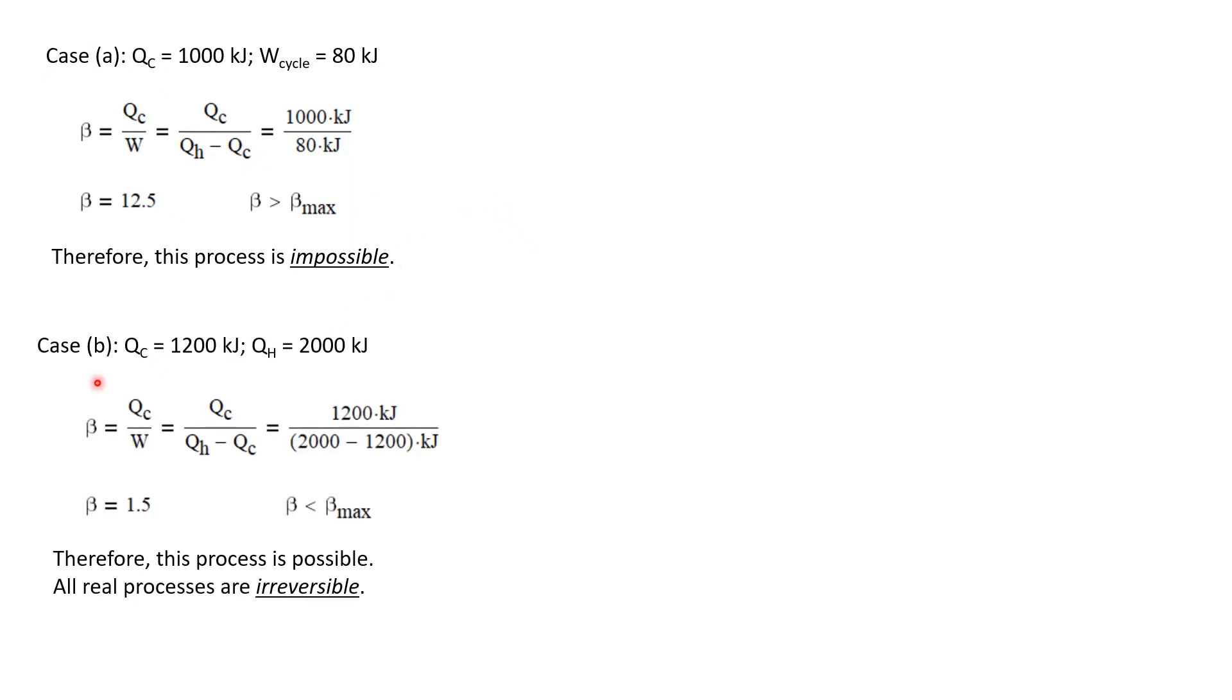Let's look at the second case. We have QC is 1200 kilojoules and QH is 2000 kilojoules. We know that beta is QC over W. Substituting QH minus QC from an energy balance for W, we get beta equals QC over QH minus QC. That's 1200 kilojoules divided by 2000 minus 1200 kilojoules. We get beta is 1.5.